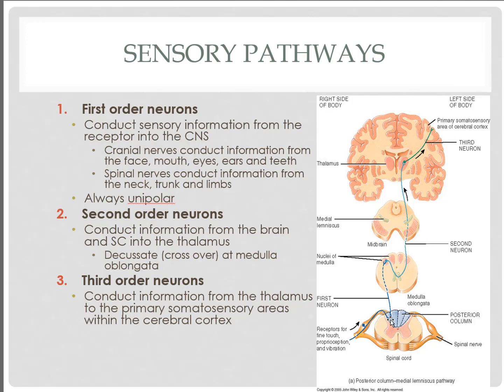Any type of somatosensory information from the general senses makes its way through first, second, and third order neurons — from the thalamus to the primary somatosensory area of the cerebral cortex. That somatosensory area has generalized regions where sensory information results. Areas finely attuned to more sensory information represent a bigger area of the somatosensory cortex. This is our somatosensory homunculus.